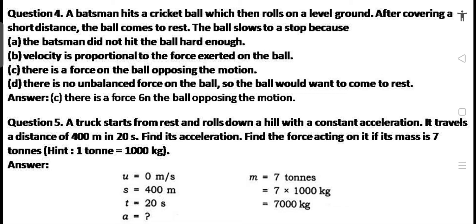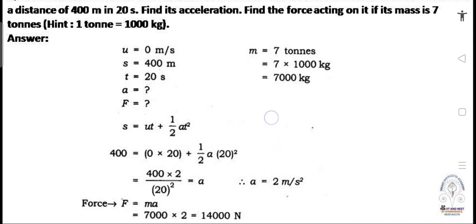Q5: A truck starts from rest and rolls down a hill with a constant acceleration. It travels a distance of 400 meters in 20 seconds. Find its acceleration and the force acting on it if its mass is 7 tonnes. Answer: U = 0 m/s, S = 400 m, T = 20 s, M = 7000 kg. Using S = UT + ½AT²: 400 = 0 + ½ × A × 400, so A = 800/400 = 2 m/s². Force = M × A = 7000 × 2 = 14,000 N.